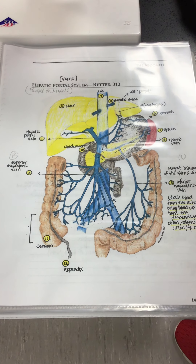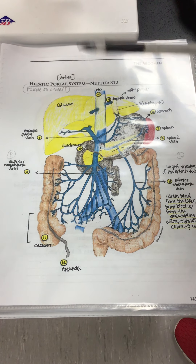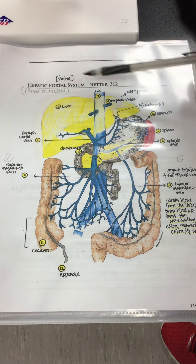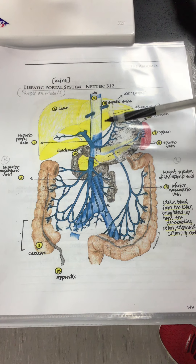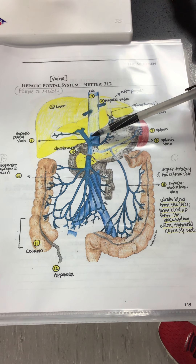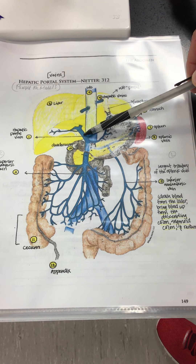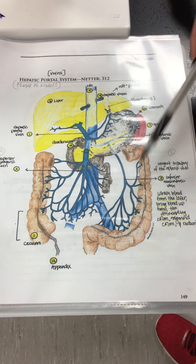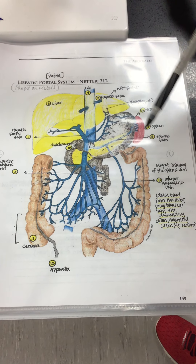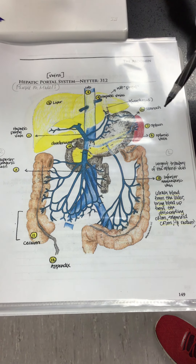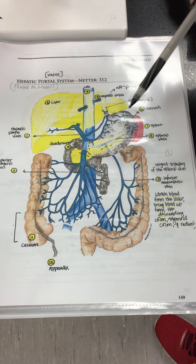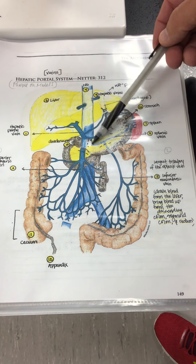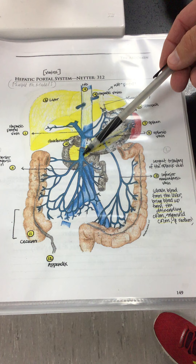I want to review for you on this picture real quick what we're looking at. We've got the superior vena cava. We're talking about the hepatic portal system, and we've got the hepatic portal vein and its major branches. There are other branches — if you look at another book or an atlas you might see some others — but we're just going to talk about the hepatic portal vein, the splenic vein, the superior mesenteric, and the inferior mesenteric.